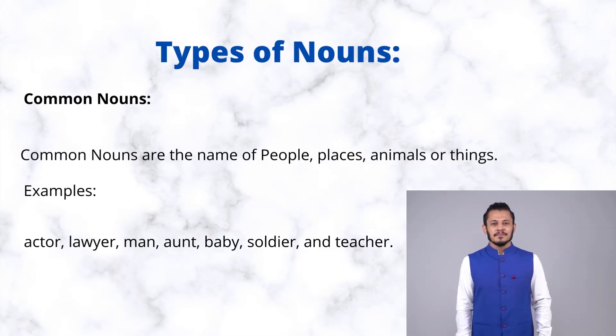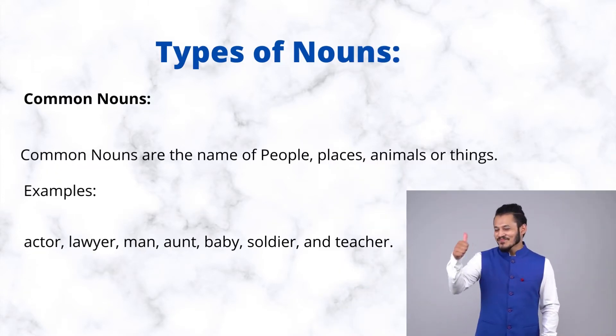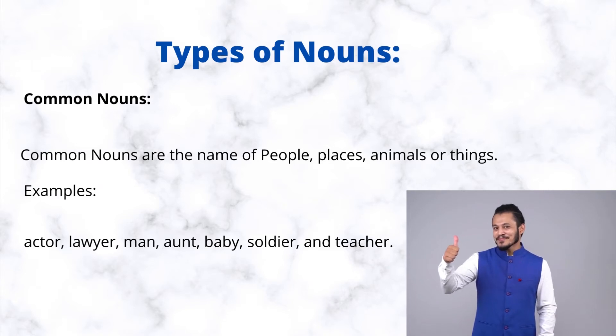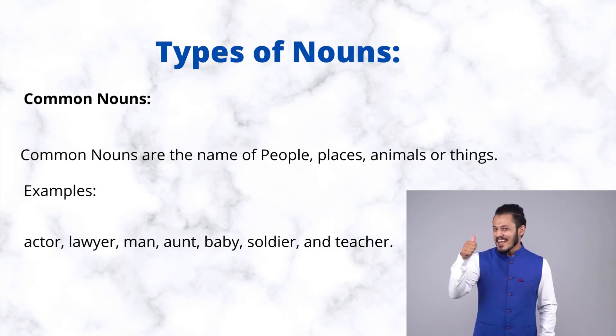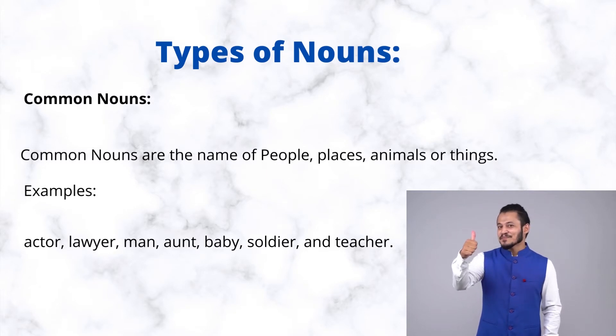Types of nouns. Common nouns are the name of people, places, animals, or things. Examples: actor, lawyer, man, aunt, baby, soldier, and teacher.